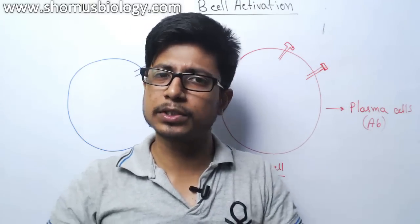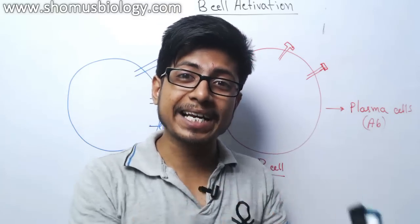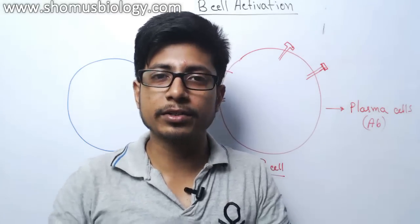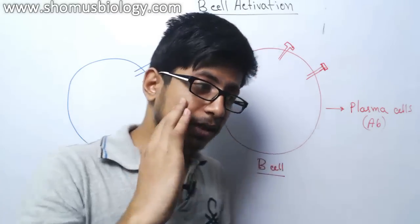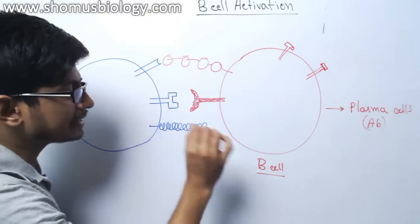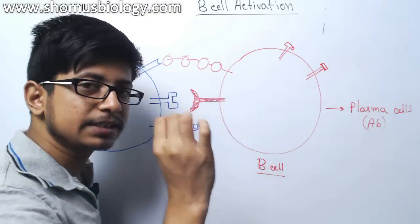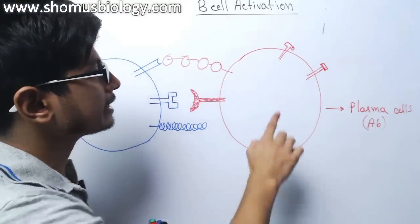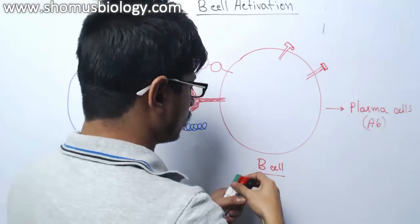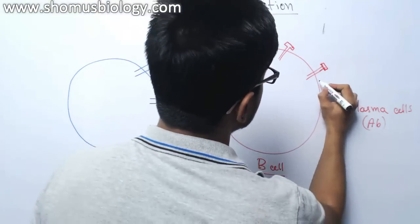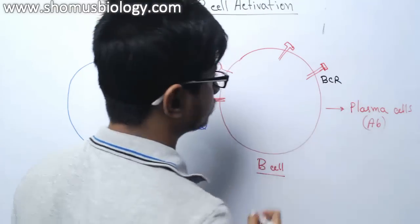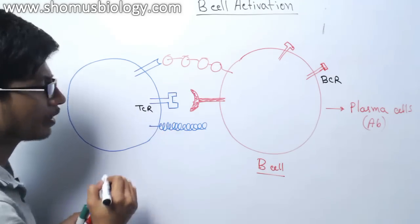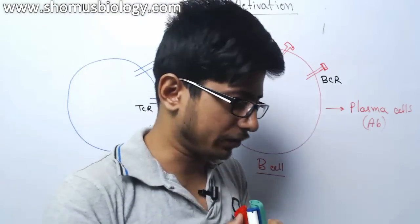Everything is present in our immune system — those cells are armed with so many different things but they are not active all the time; they are inactive, just lingering around throughout our body. To activate these cells, consider that B cells are normally present in inactive form. They have B cell receptors on the surface, known as BCR, just like the T cell receptor.